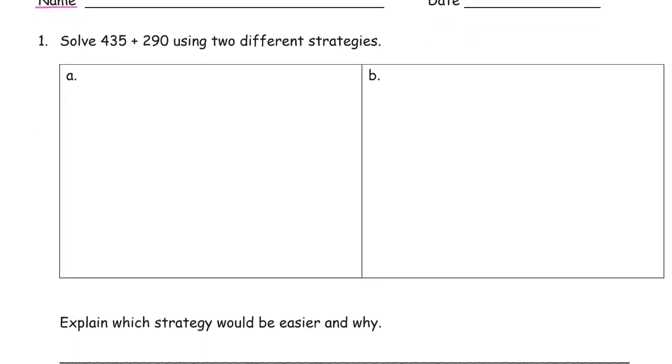And we're solving 435 plus 290 using two different strategies. Well, I'm noticing first off that this 290, it's awfully close to 300. So, if I do this...